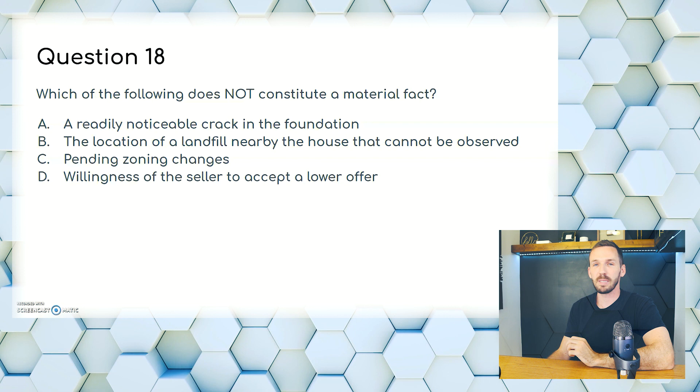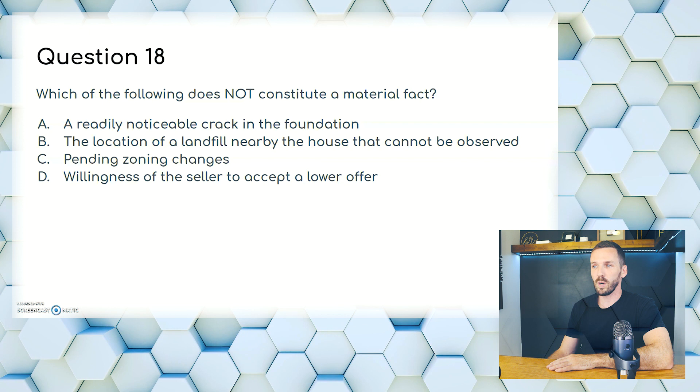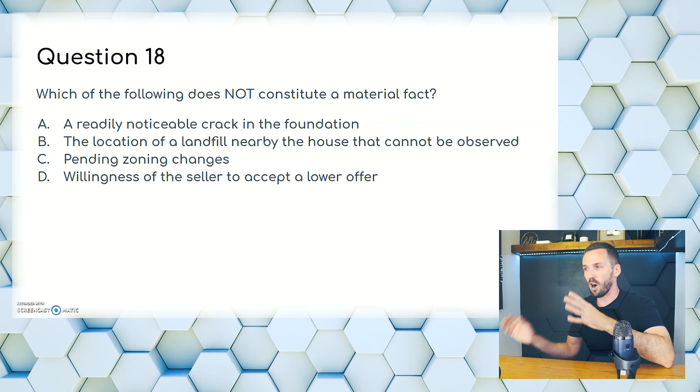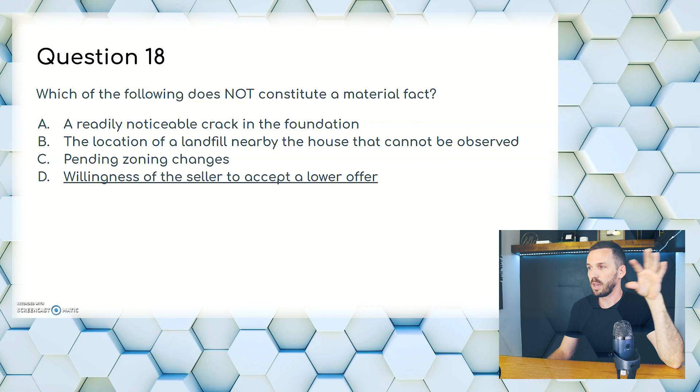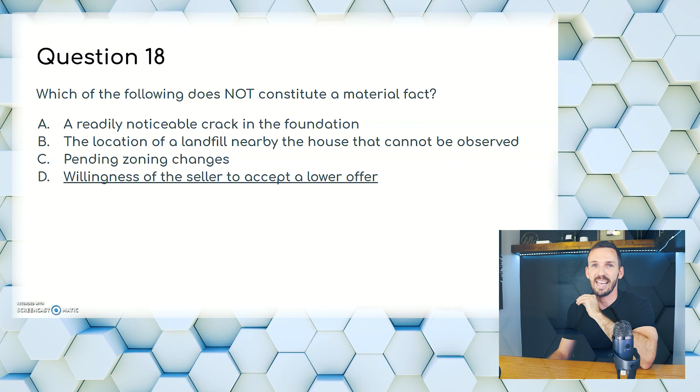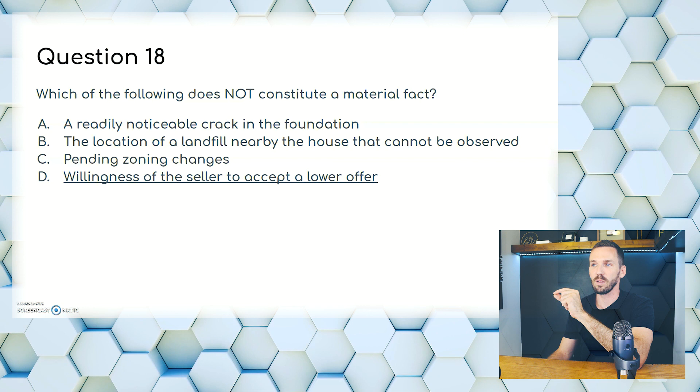Question 18. Which does not constitute a material fact? A, a readily noticeable crack in the foundation; B, the location of a nearby landfill that cannot be observed; C, pending zoning changes; or D, willingness of the seller to accept a lower offer. Material facts are harmful issues with the property itself. Disclosing your negotiating position is not a material fact — you work in the interest of your client and don't reveal that they'd go lower. The answer is D.